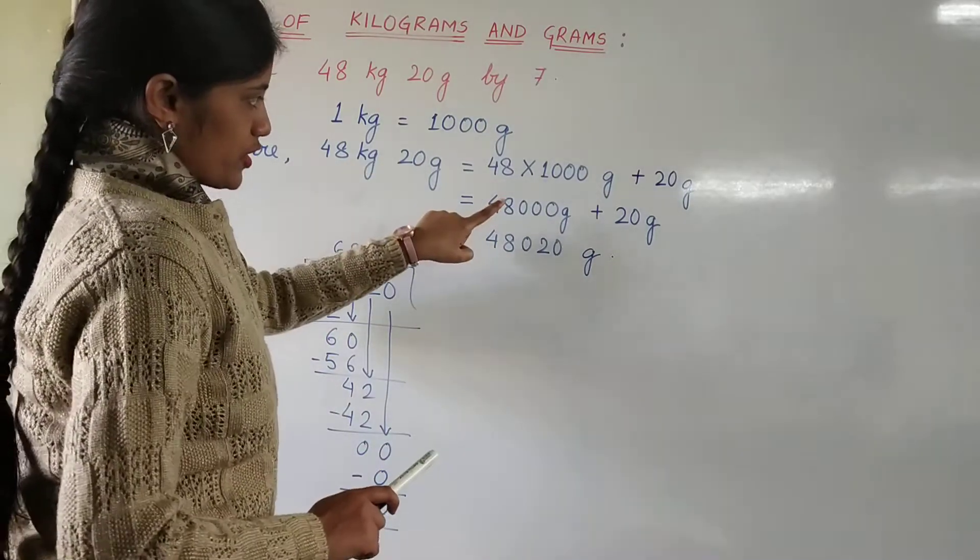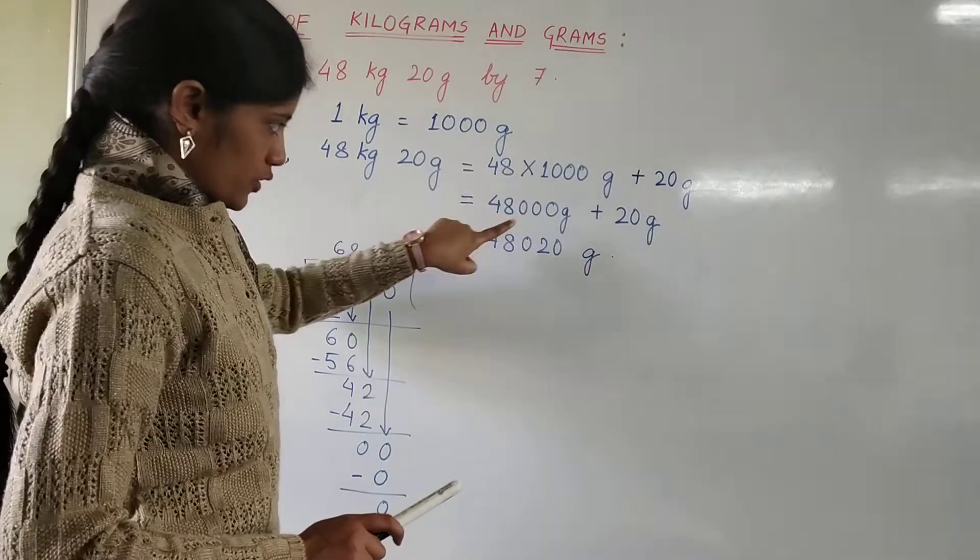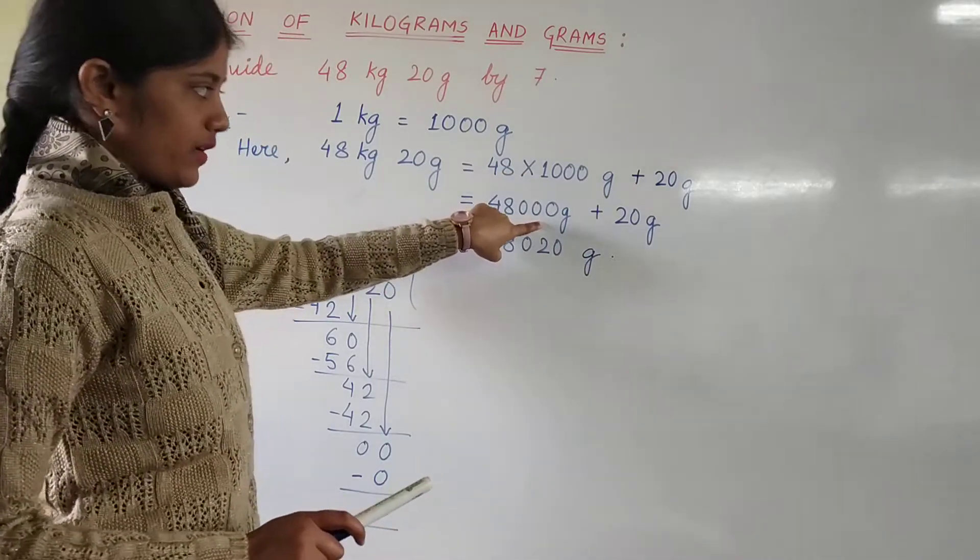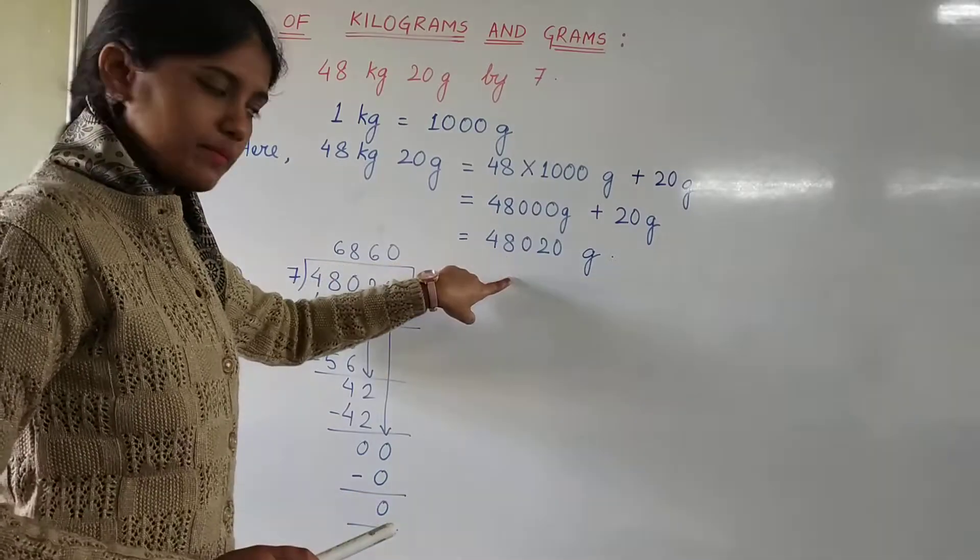For conversion, we multiply 48 by 1000 to convert kilograms to grams. After conversion, the dividend becomes 48,020 grams.